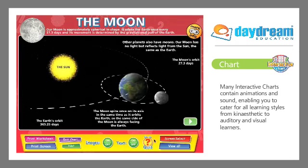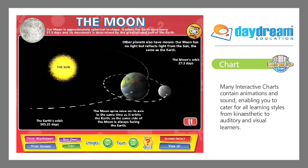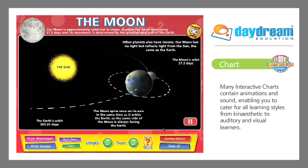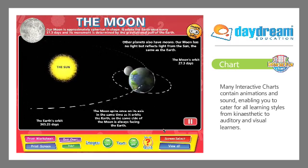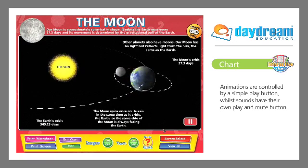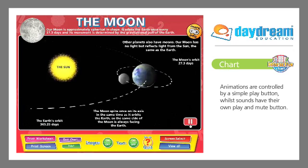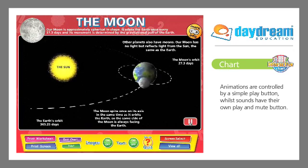Many interactive charts contain animations and sound, enabling you to cater for all learning styles, from kinesthetic to auditory and visual learners. Animations are controlled by a simple play button, whilst sounds have their own play and mute button.